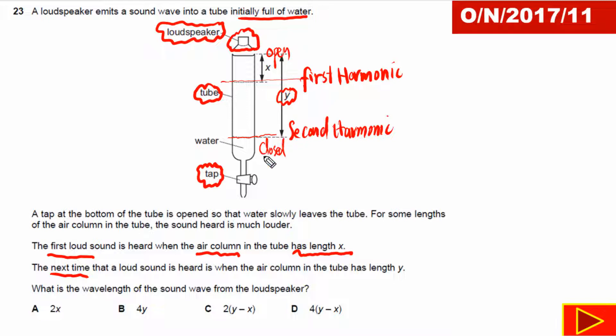Now as you can see here one end is closed and one end is open, so it is simply one end closed pipe. One end closed pipe simply tells us that only odd harmonics are produced.